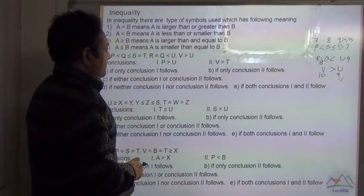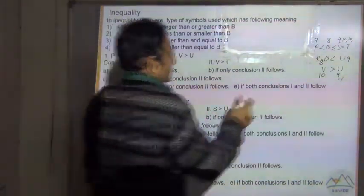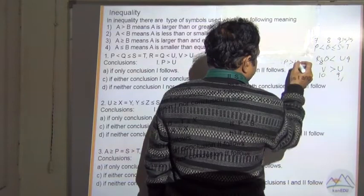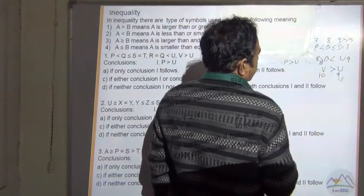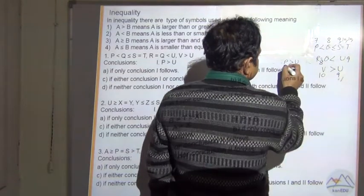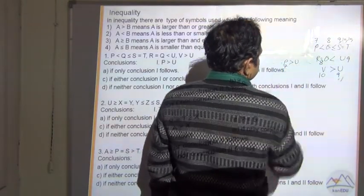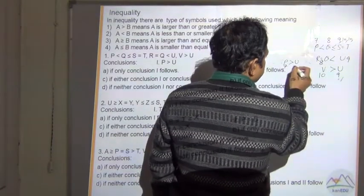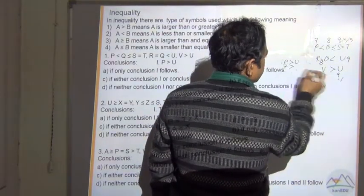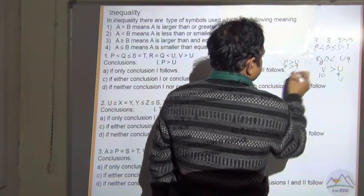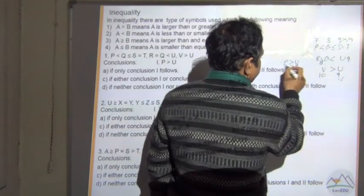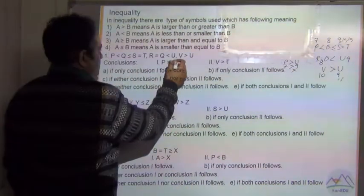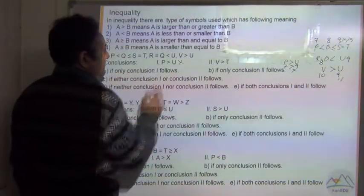Now let's see: is P greater than U? P is 7 and U is 9. So 7 is not greater than U — this condition does not follow.